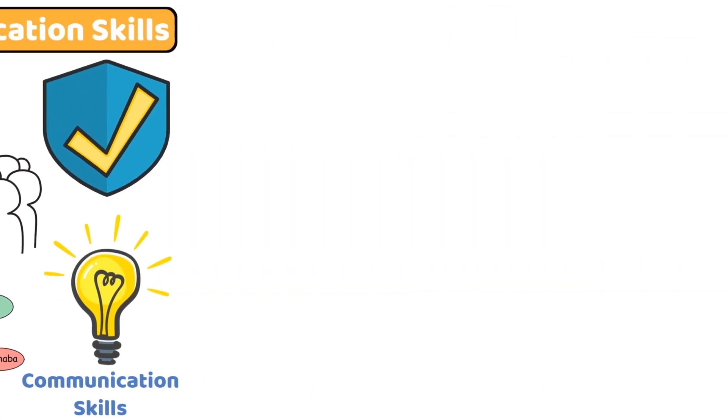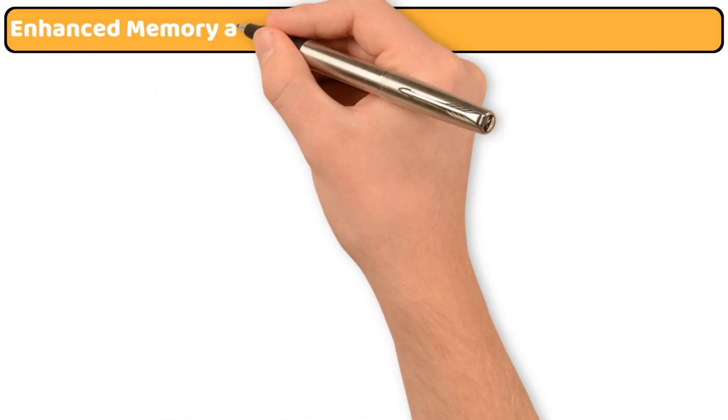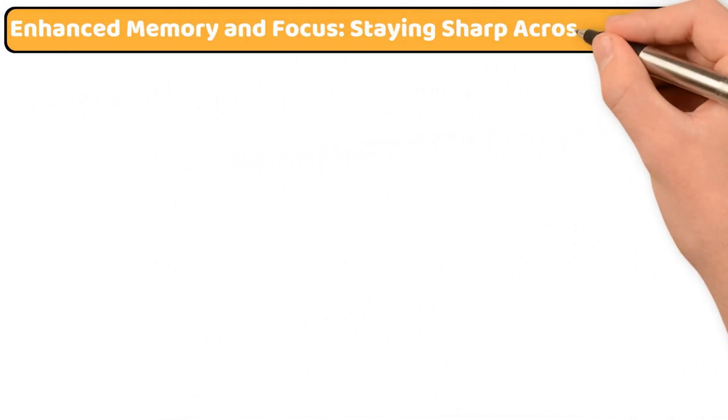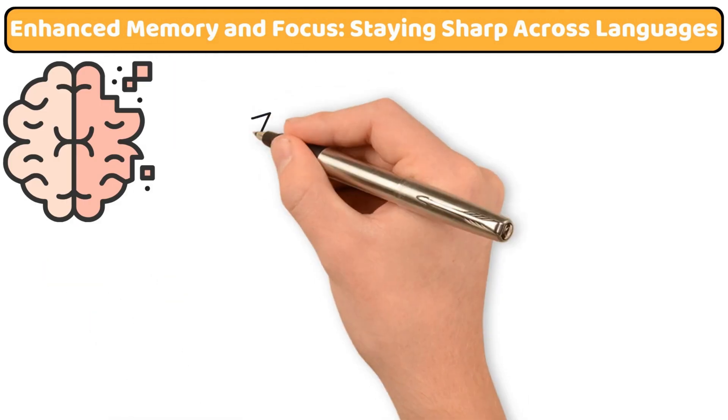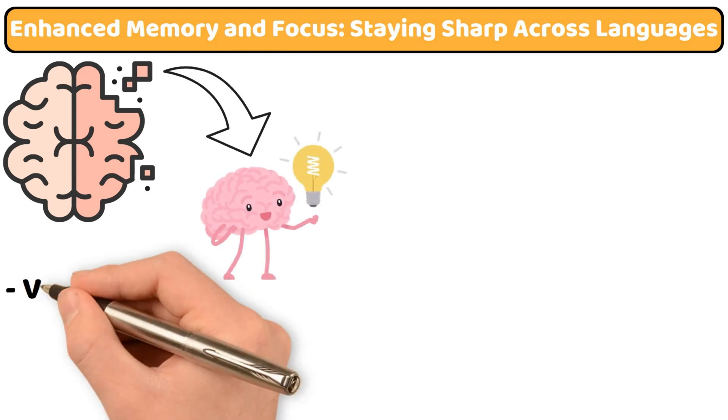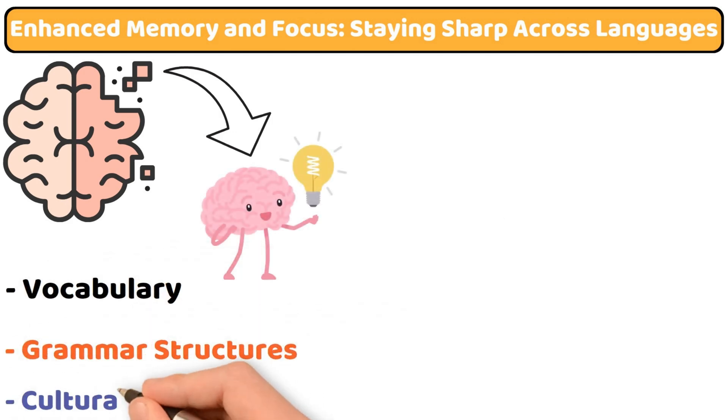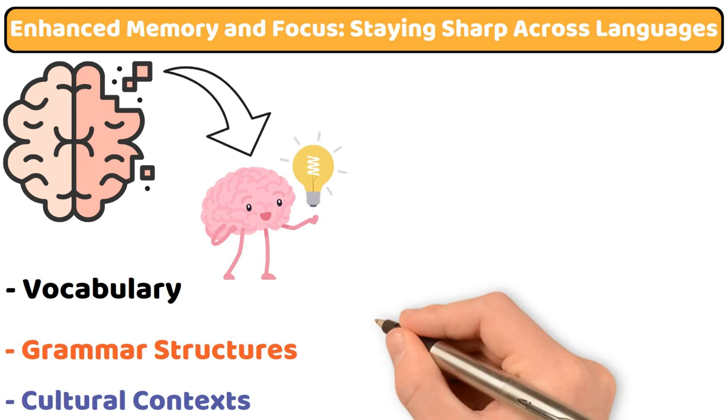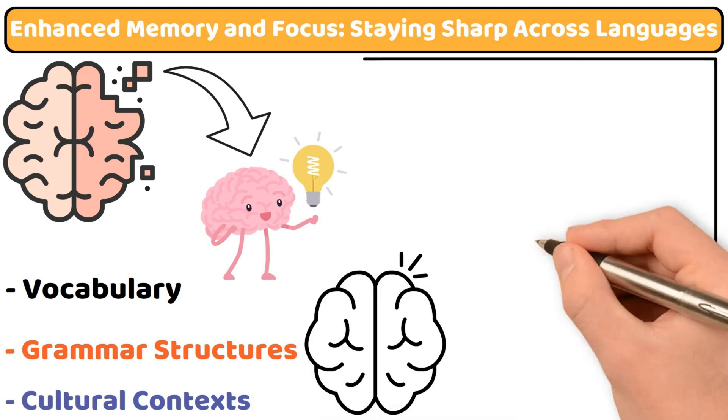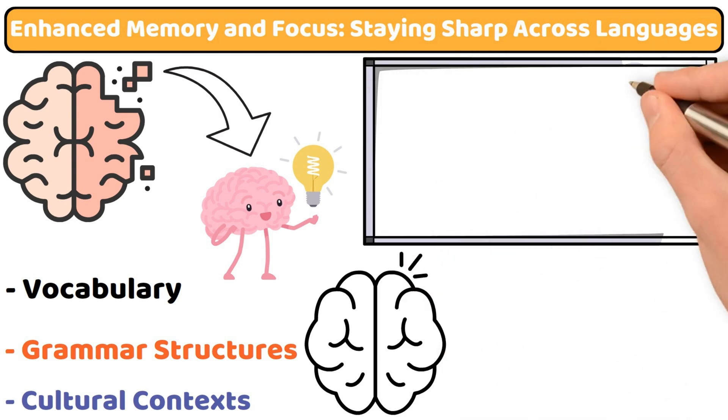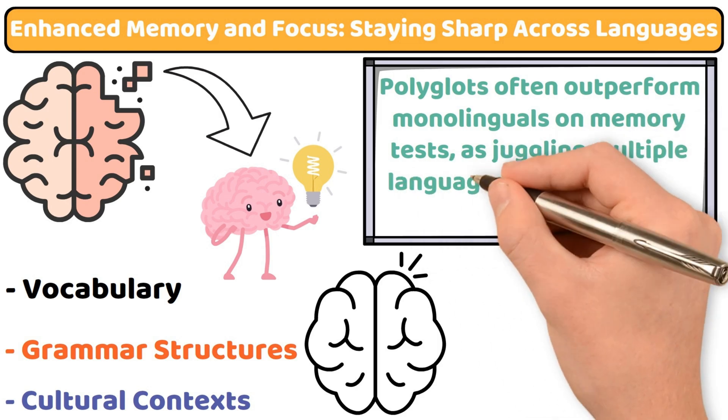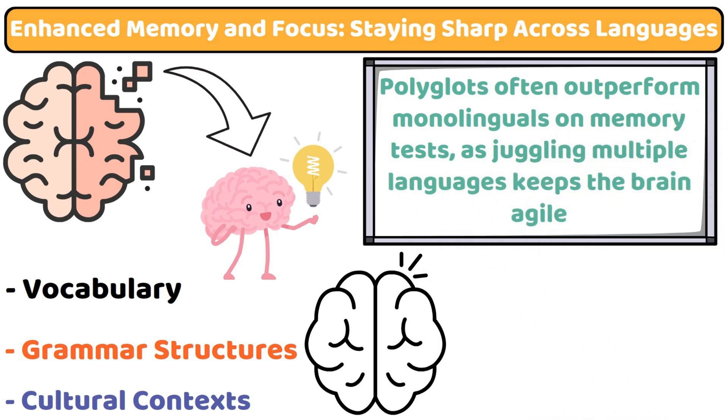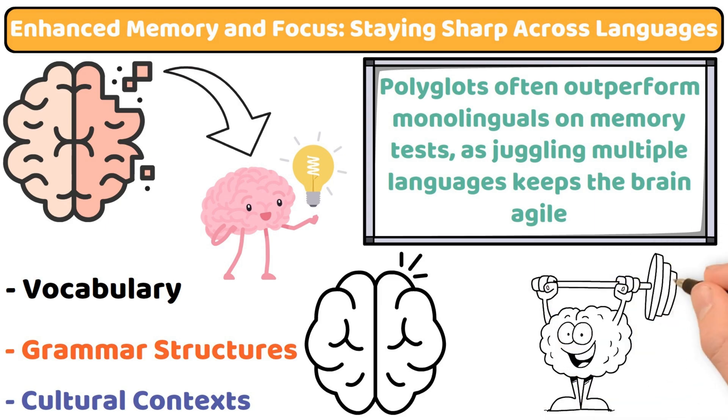This heightened self-assurance can have a ripple effect, strengthening your voice in every language you speak. Enhanced memory and focus: staying sharp across languages. Learning languages strengthens your memory and focus by training your brain to remember vocabulary, grammar structures and cultural contexts. This cognitive workout enhances recall and reduces mental fatigue over time. Studies show that polyglots often outperform monolinguals on memory tests as juggling multiple languages keeps the brain agile.